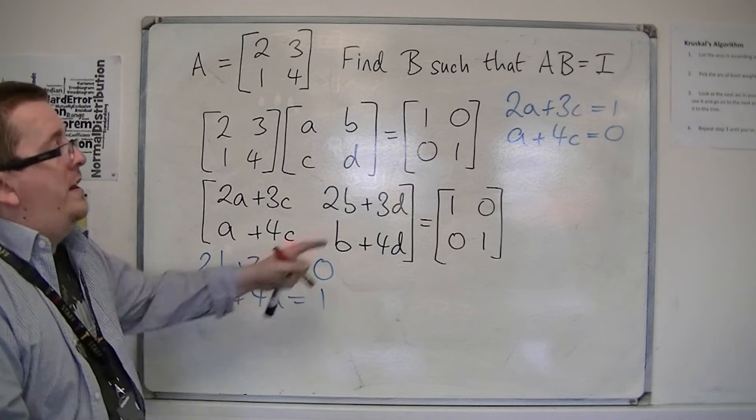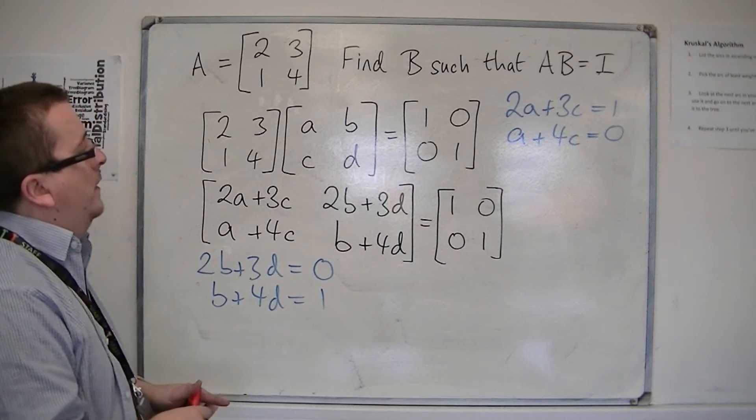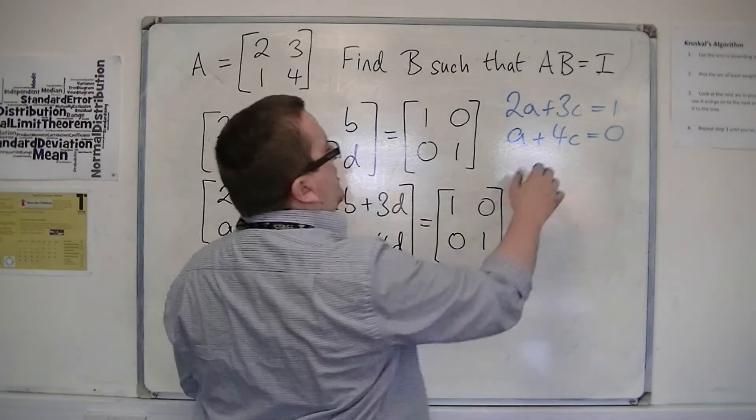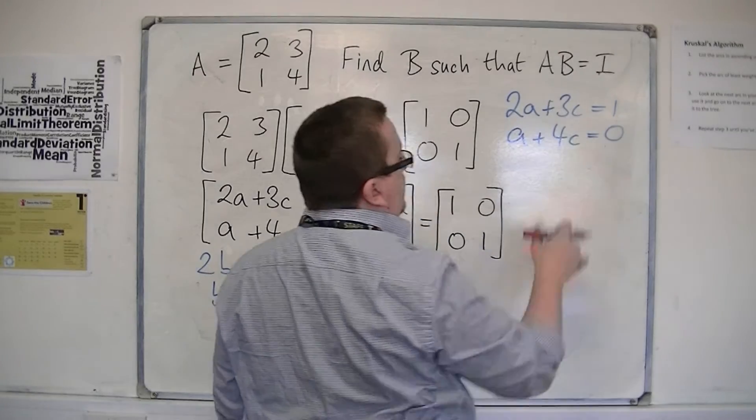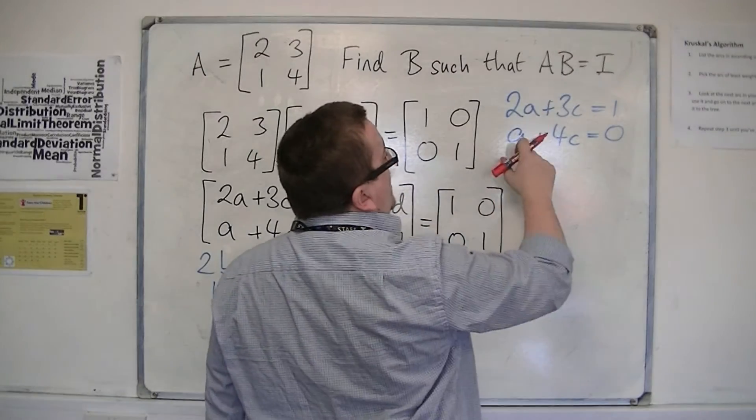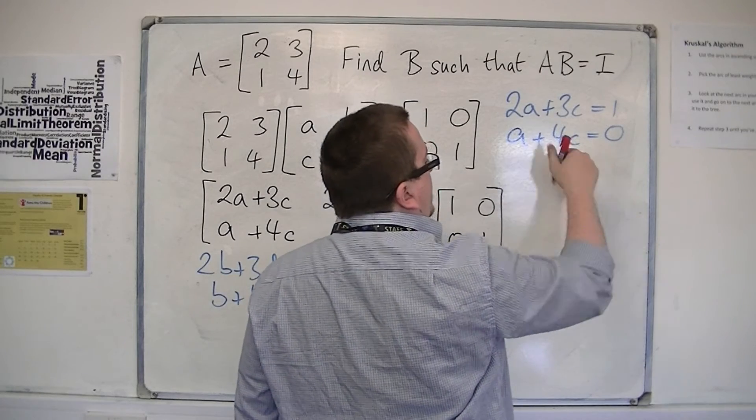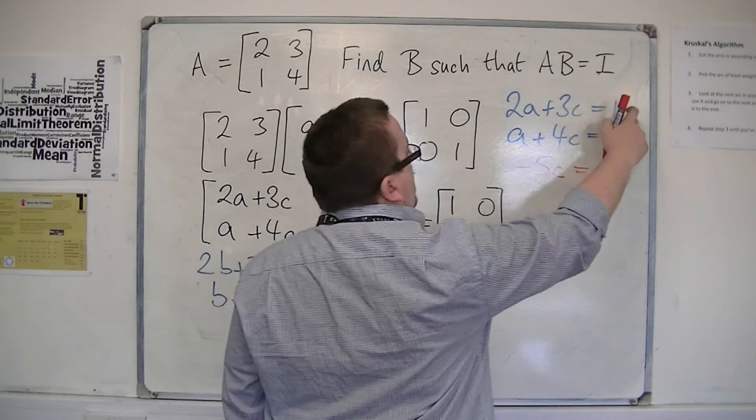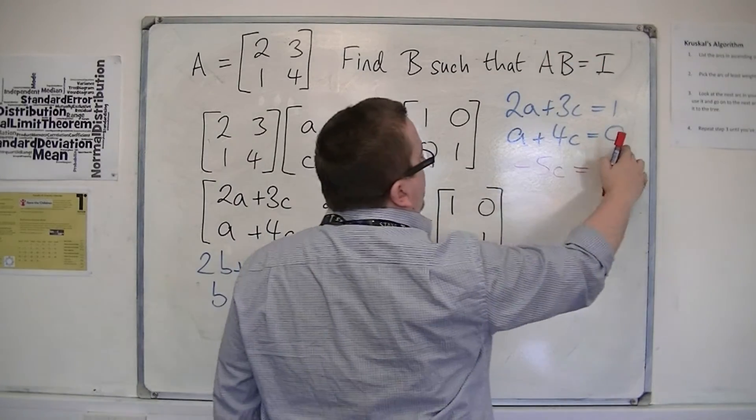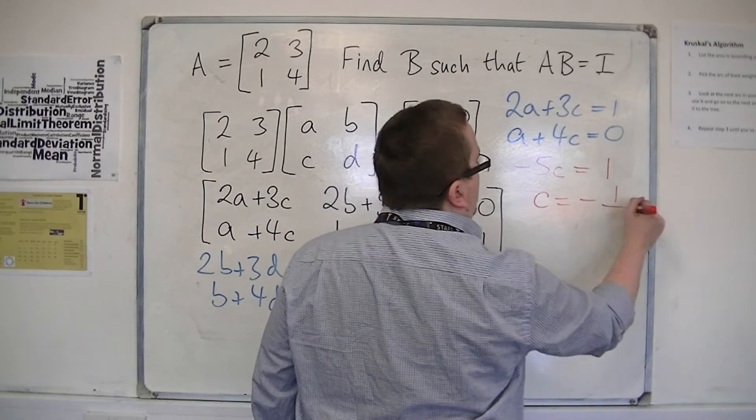So I've spaced them out that way because I'm going to have to solve these as simultaneous equations. If I start with these two equations, I'm going to do the top equation take away 2 lots of the bottom, because that will eliminate the a's. So I've got 3c take away 8c, that's minus 5c, and then 1 take away 2 lots of 0, so it's just 1. So that means that c is minus 1/5.